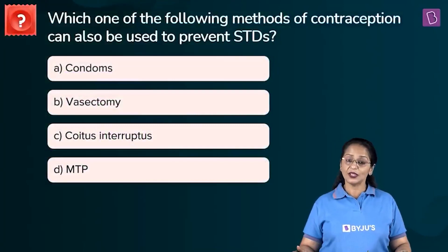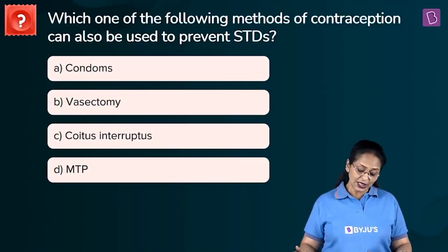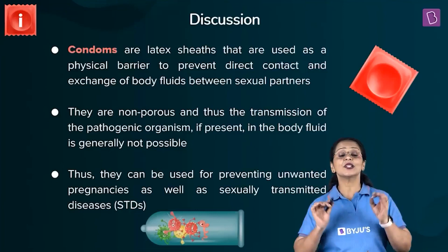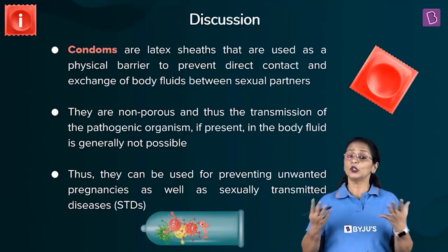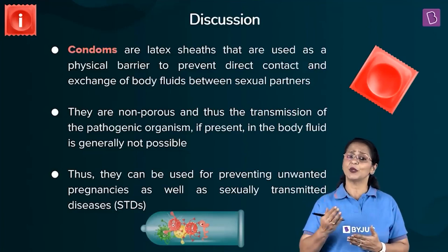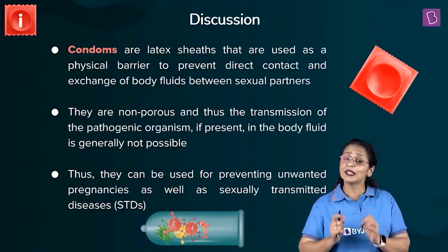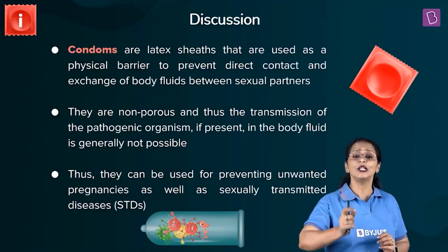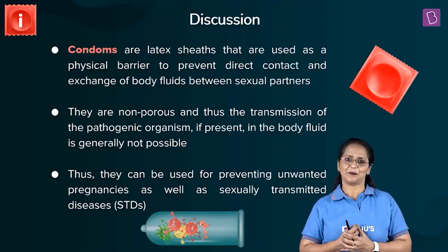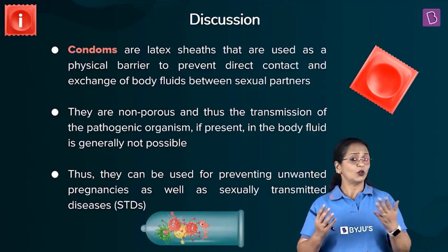New question: which one of the following methods of contraception can also be used to prevent STDs? a) Condoms, b) vasectomy, c) coitus interruptus, or d) MTP. STDs — sexually transmitted diseases or STIs — are also called venereal diseases. These are diseases caused by the transmission of the infecting organism, the pathogen, from one infected individual to his or her partner through sexual contact.